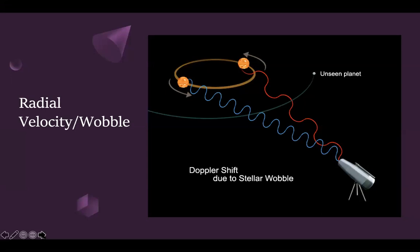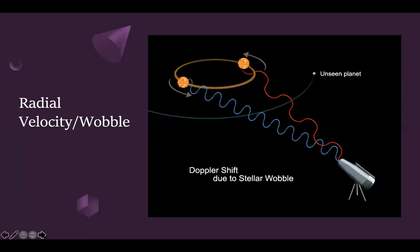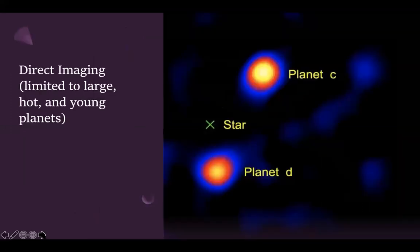When a planet circles around a star, the star itself exhibits a kind of wobbling. Scientists call this a Doppler shift. By looking at this wobbling in the data, scientists find that there is a planet altering the movement of the star. This is one detection method.